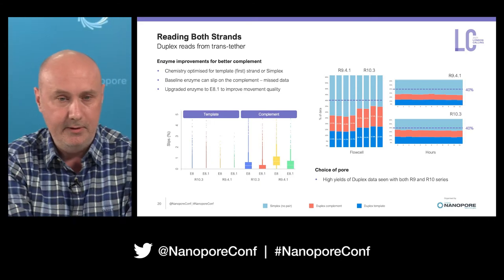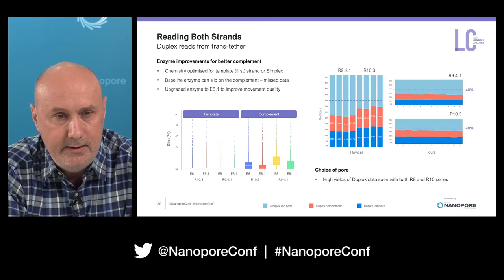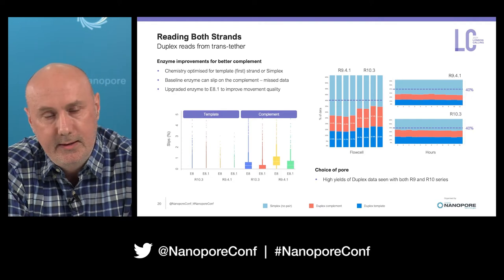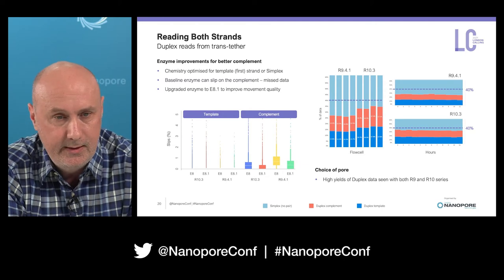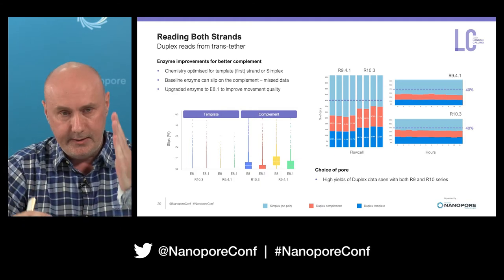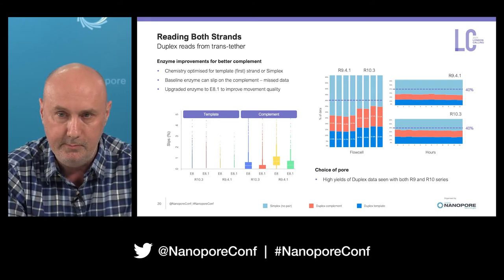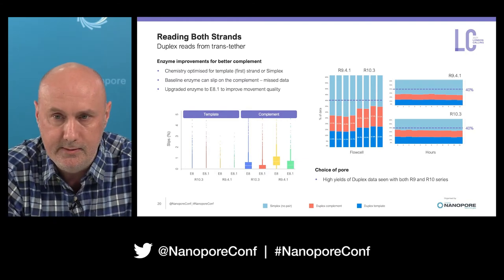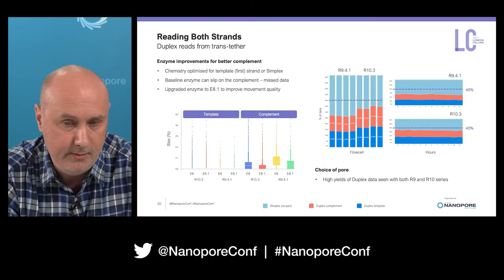Another significant innovation to enable this is part of the Q20+ work — we've upgraded to the E8.1 enzyme. This substantially improves movement quality on the complement strand. In the old systems, apart from secondary structure formation on the trans side, we'd get a lot of skips and slips on the complement. You can't take a good first strand and a poor second strand and make a really good combination — you have to get both of them to be really good. The complement quality we now see on this chemistry is almost the same as on the first strand, and that's what's really paying off, along with the software improvements.